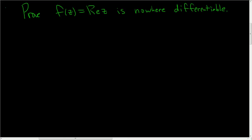We have to show that the function f of z equal to the real part of z is nowhere differentiable, so proof. We'll use the Cauchy-Riemann equations.